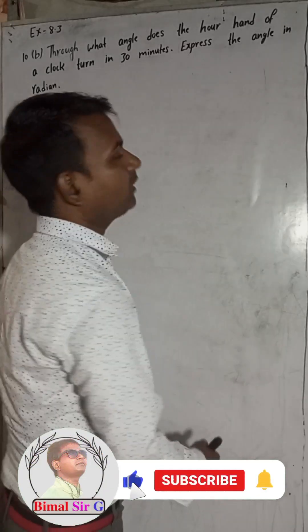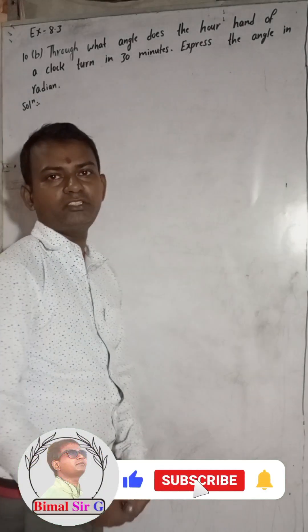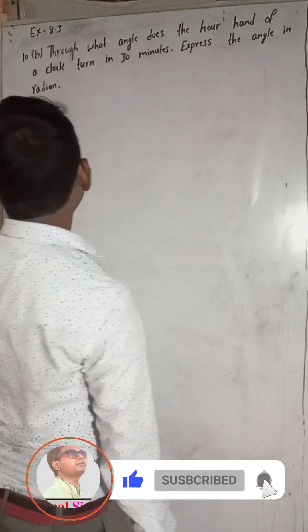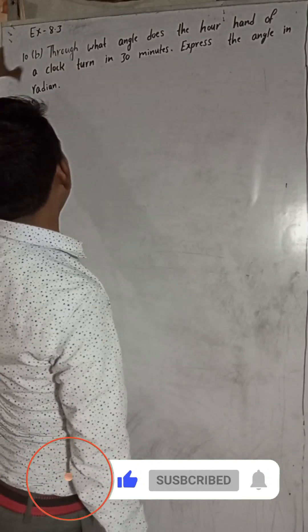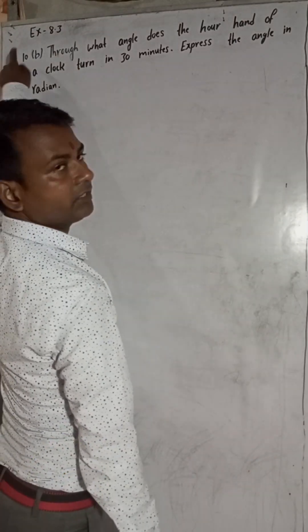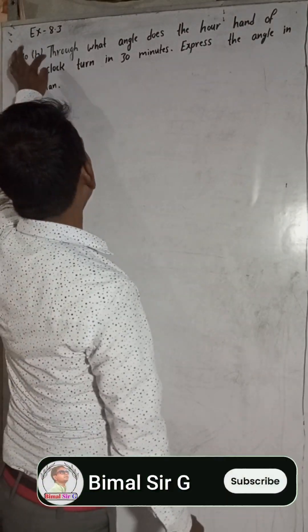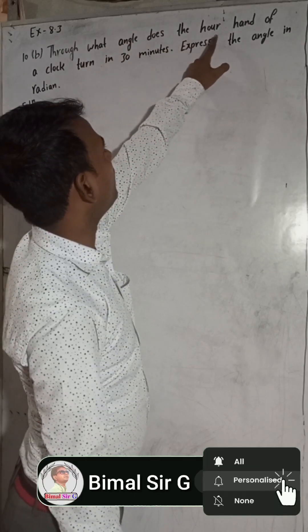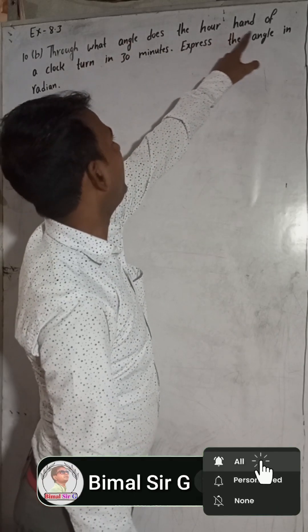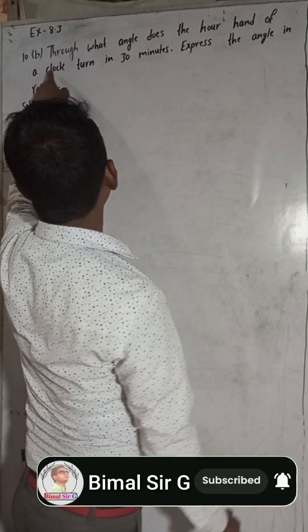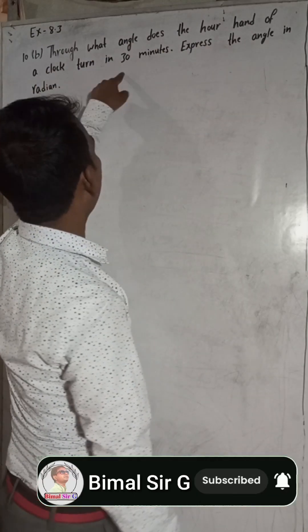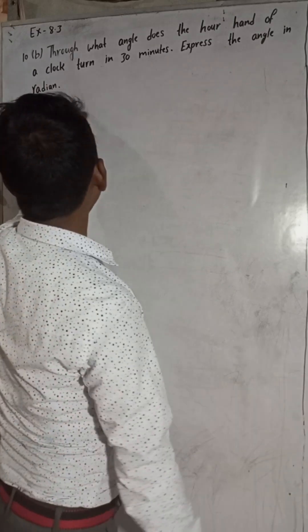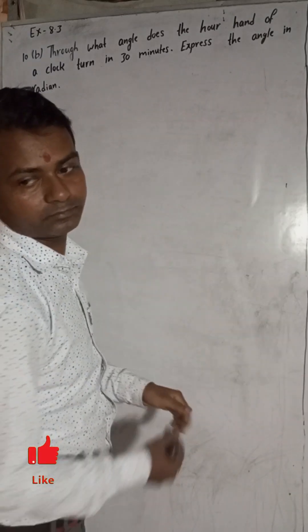Hi everybody, welcome back to Bhimarsarji's YouTube channel. Now I am going to solve exercise 8.3, question number 10B: Through what angle does the hour hand of a clock turn in 30 minutes? Express the answer in radians.